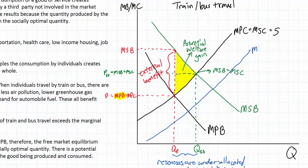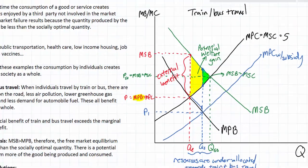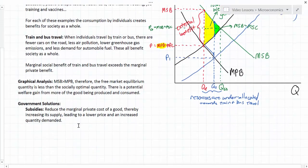A subsidy to providers of train and bus travel will lower the marginal private cost, shifting the MPC curve down. This lower marginal private cost leads to a decrease in the equilibrium price to P1, moving us along the marginal private benefit curve and increasing quantity demanded to QS. At QS, the triangle representing the potential welfare gain is now much smaller — the subsidy has reduced the welfare loss from underproduction, though it has not entirely eliminated the market failure.